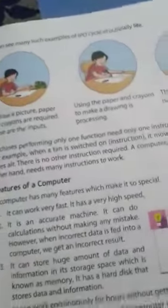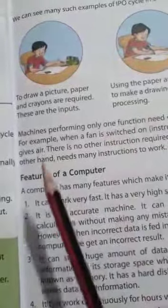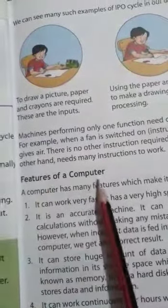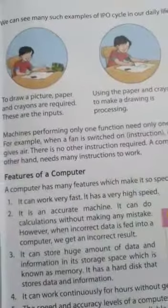So it's a simple example of IPO: input, processing and output. I hope today you all understand these two topics, working of a computer and computer as a smart machine. Tomorrow I will come back with another topic, features of a computer. Thank you.